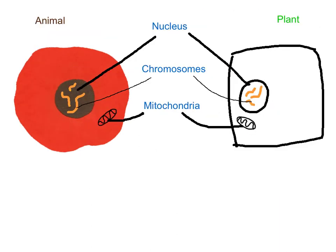There is another important organelle inside of the cells. It's going to be very closely attached to the nucleus. This is a series of channels — an organelle attached to the nucleus, and it's called the endoplasmic reticulum. Let's call it ER for short.